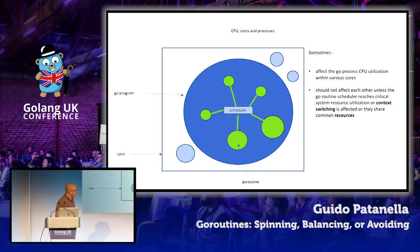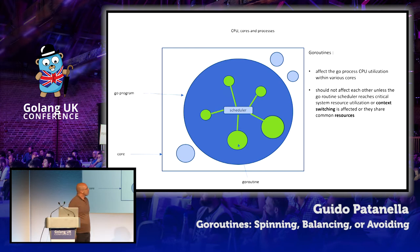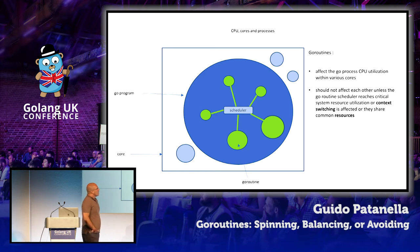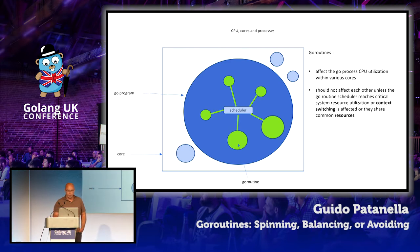A Go process is composed of Go routines, and there's an internal routine scheduler involved in elaborating the map between those and the operating system threads. We know that Go routines do affect CPU utilization within various cores. Your single executable that you thought was a tiny little grain within your server is potentially occupying all cores. But they should not affect each other — there is a sort of isolation, though it's not true when we have situations of context switching and consuming the same resources.